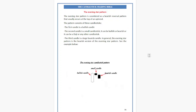The Evening Star pattern is considered a bearish reversal pattern and usually occurs at the top of an uptrend. The first candle is a bullish candle. The second candle is a smaller candlestick — it can be bullish, bearish, a Doji, or any other candle. The third candle is a large bearish candle. In general, the Evening Star pattern is the bearish version of the Morning Star pattern.